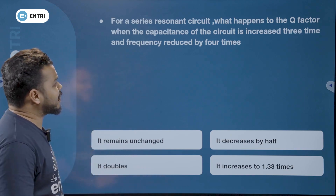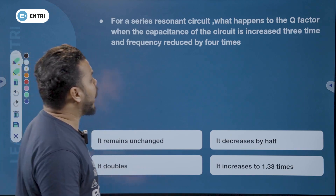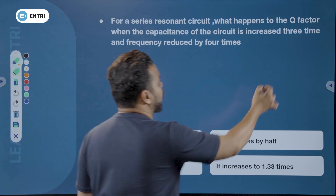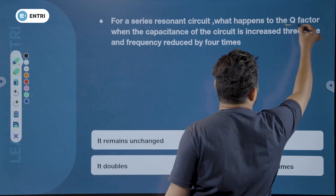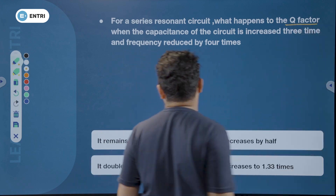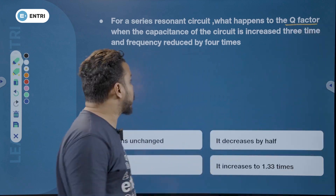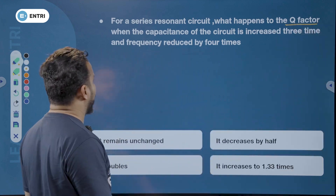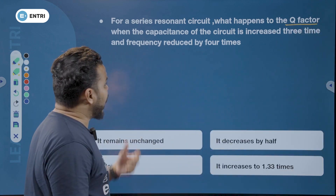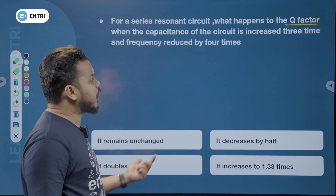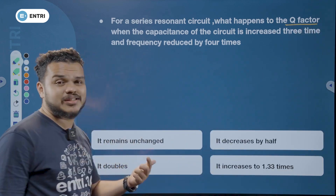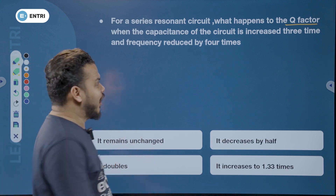For a series resonance circuit, what happens to the quality factor when the capacitance of the circuit is increased 3 times?